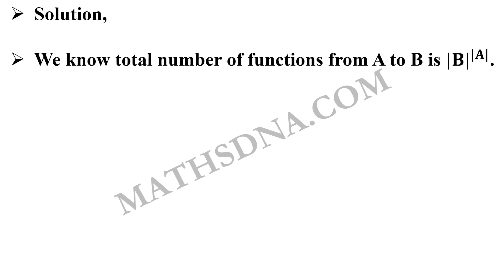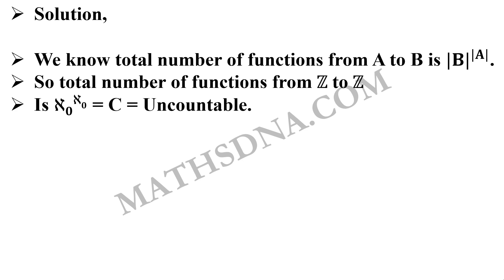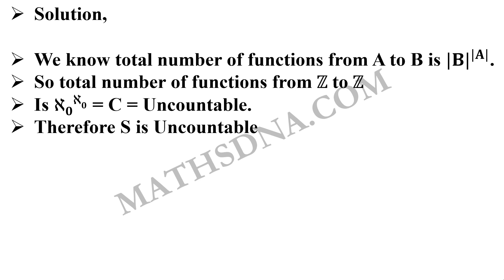Now moving on to the solution. We know that the total number of functions from any set A to B will be the cardinality of B raised to the cardinality of A. Here the function is defined from Z to Z, so the total number of functions from Z to Z will be ℵ₀ raised to ℵ₀, which equals the continuum C — that is uncountable. Hence our set S is also uncountable, and that is our answer.